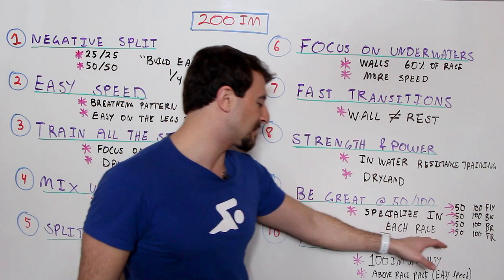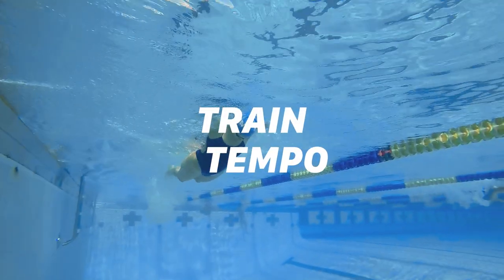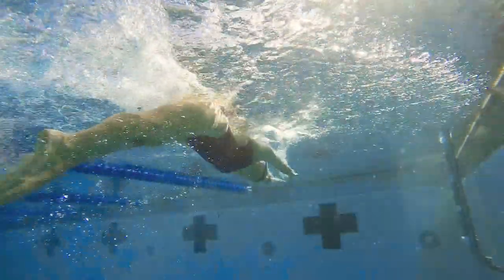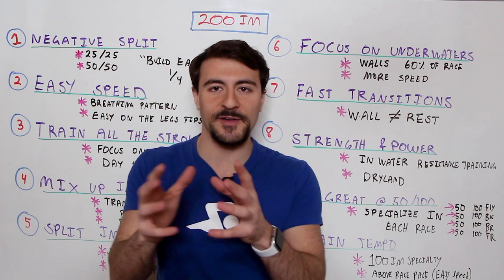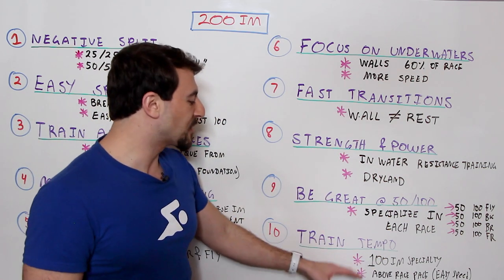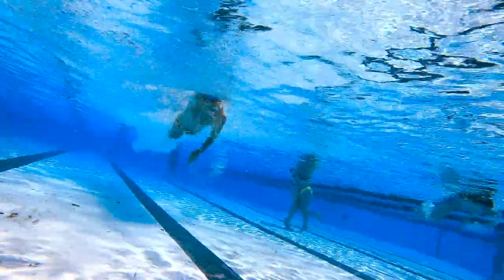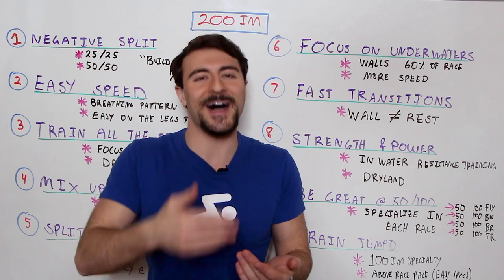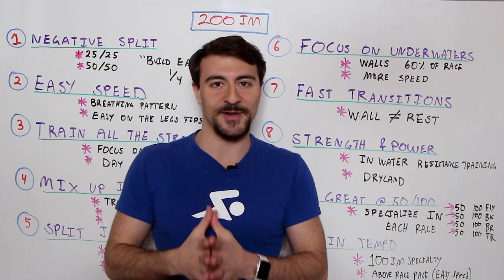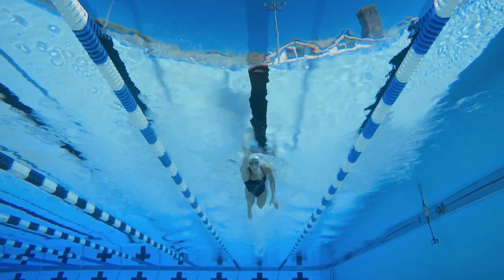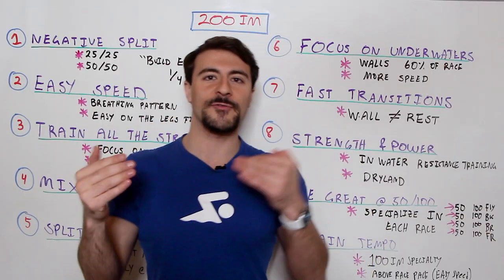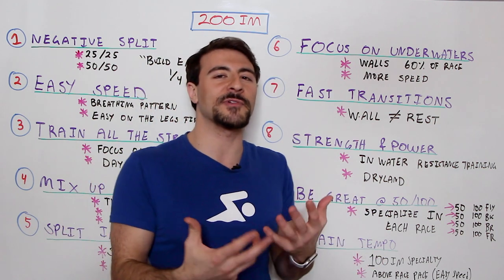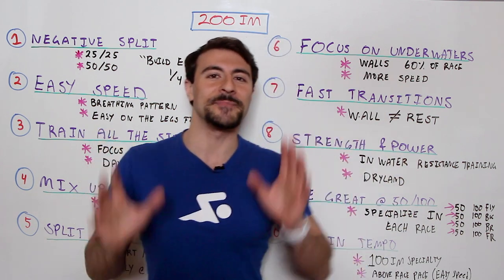Tip ten: focus on tempo. If you want to be really good at the 200 IM, you're probably also good at the 100 IM. The key is training above race pace in workouts — not just racing the 100 IM, but going faster than race pace consistently. You need easy speed at every point in the race; your first few strokes should feel like easy power. Training tempo above race pace on a consistent basis is what builds that feeling — connecting to USRPT and speed training principles.